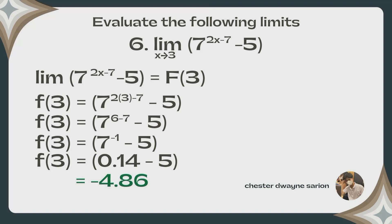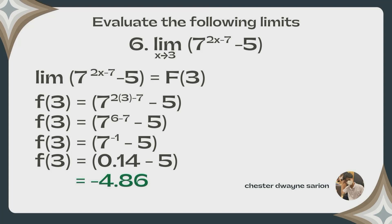Problem 6: the limit of 7 raised to 2x minus 7, minus 5 as x approaches 3. Substituting 3 into x gives 7 raised to 2 times 3 minus 7, minus 5. Simplifying the exponent: 7 raised to 6 minus 7, equals 7 raised to negative 1, minus 5. Simplifying: 0.14 minus 5 equals negative 4.86. Therefore, the limit equals negative 4.86.